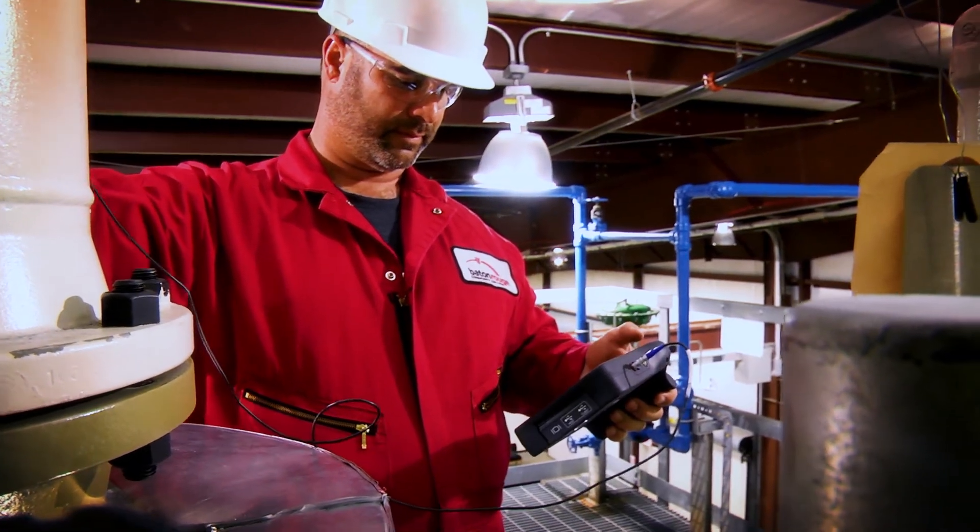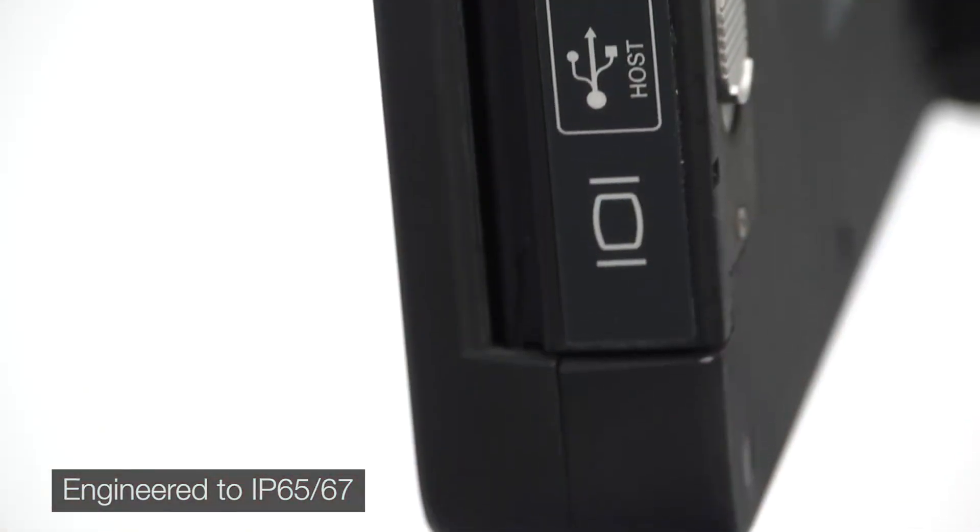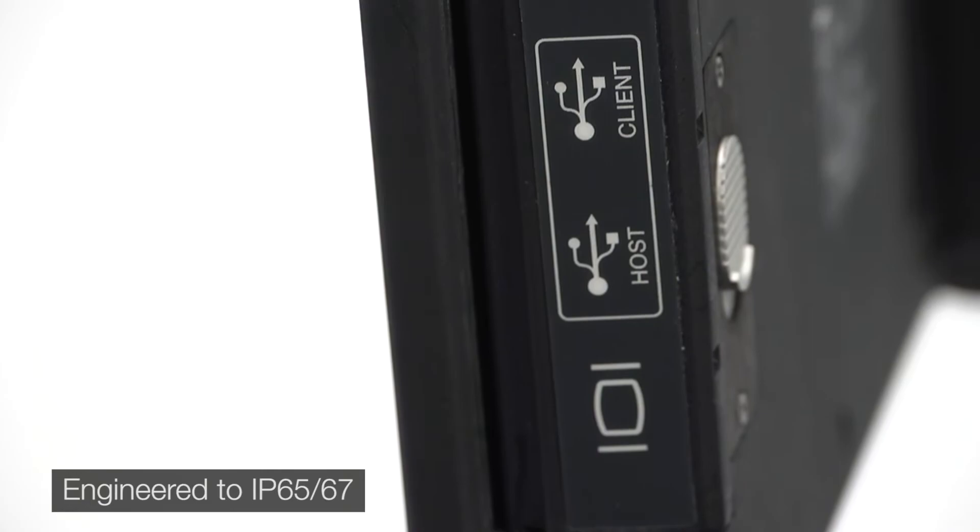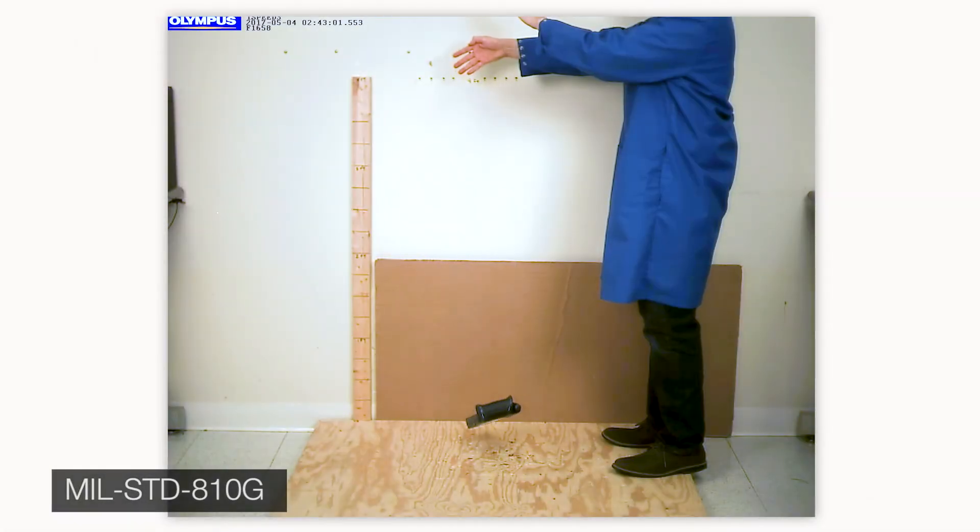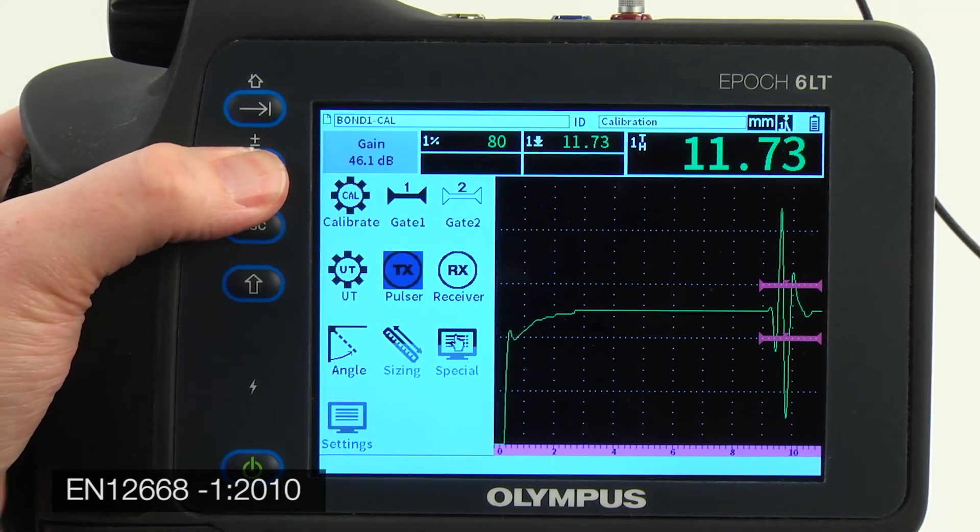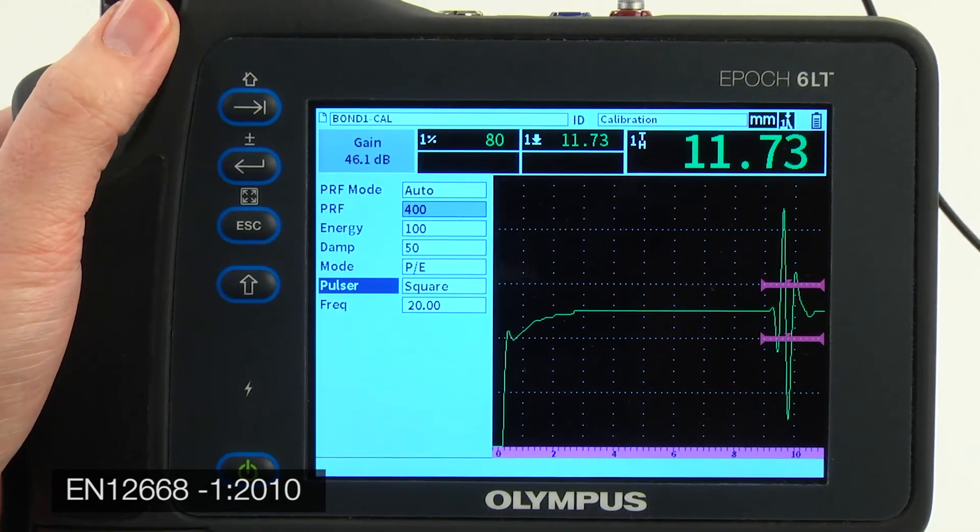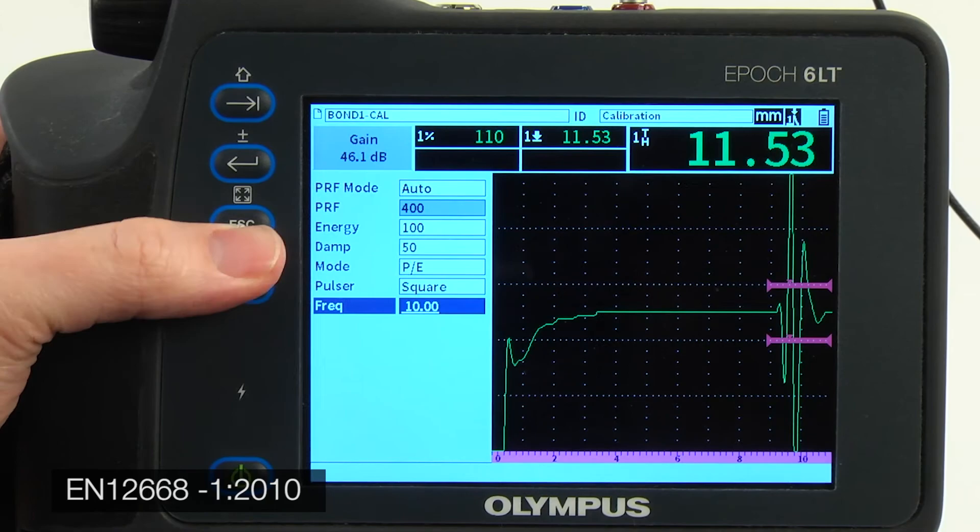The rugged EPOCH 6LT Flaw Detector is engineered to IP65 and IP67 for resistance to dust and water. The instrument is also drop, shock, and vibration tested in accordance with MIL-STD-810G. The device's electronic performance meets the rigorous certification demands of EN12668-1-2010, as well as other common industry requirements.